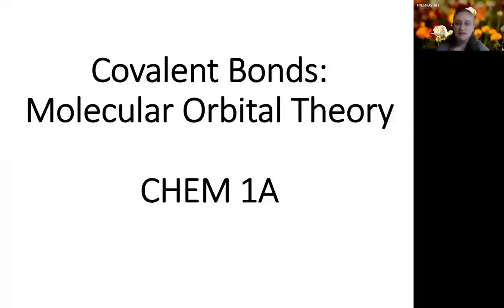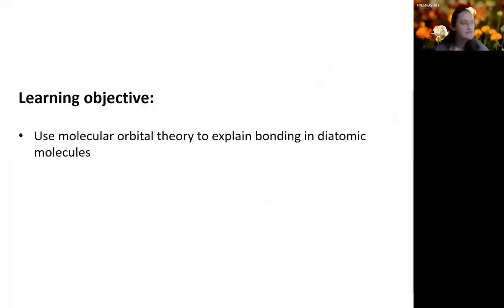In this video, we're going to take another look at covalent bonds through another theory of bonding, which is known as molecular orbital theory. After watching this video and doing some problems, you should be able to use molecular orbital theory to explain bonding, particularly in diatomic molecules.